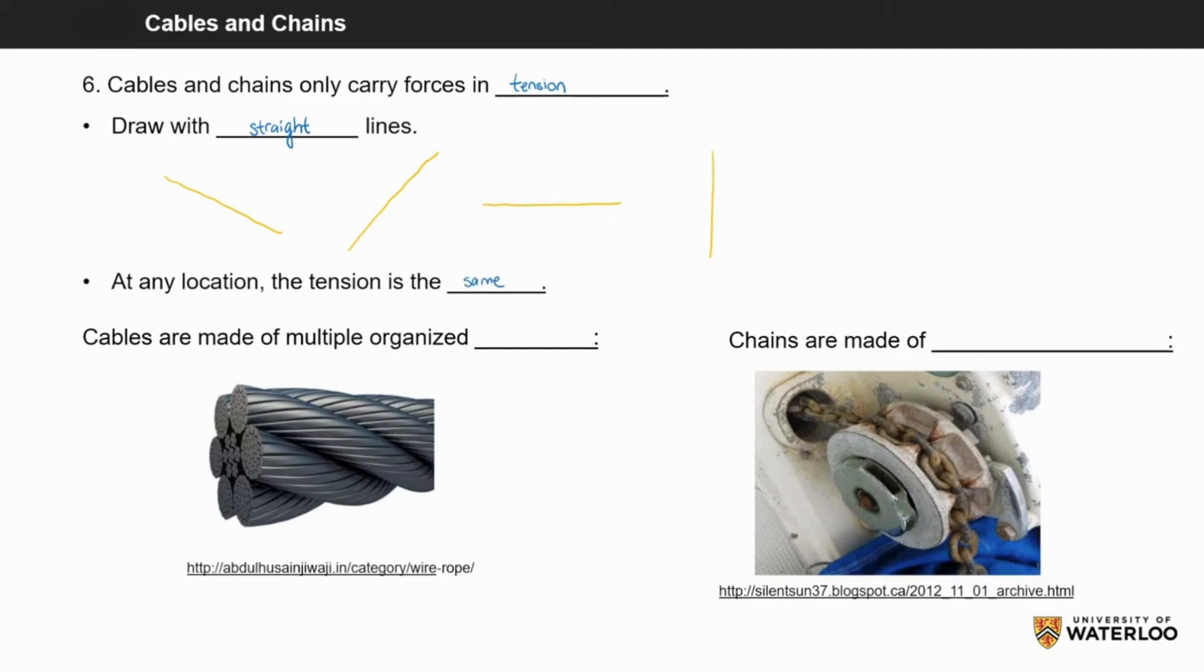Cables are made up of multiple organized wires intertwined together. I have highlighted the individual strands so you can see them better. Chains on the other hand are made of forged links. I have identified the separate links in different colors for you.